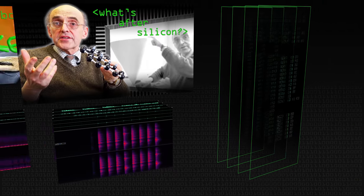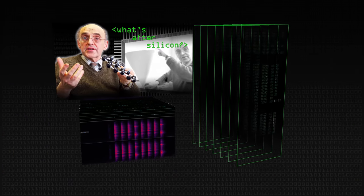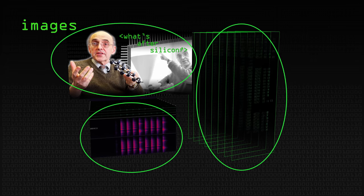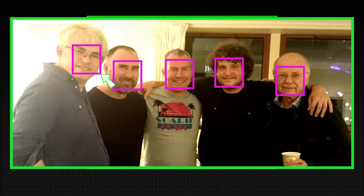Data comes in two parts: the features, as we call them, which is the raw input — the images, the audio signals, your sensor data — and then the labels. Labels usually have to be provided by humans. For example, if you're trying to find all the faces in an image, then somebody needs to actually look at the image and draw little bounding boxes around every face so you know where they are. That is time-consuming and also very boring.